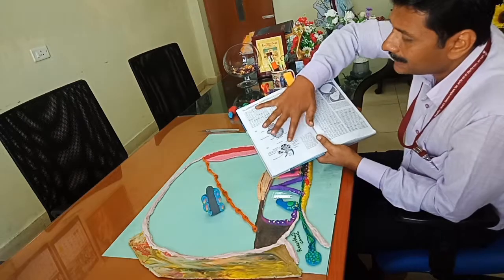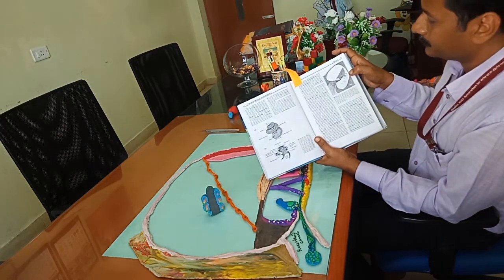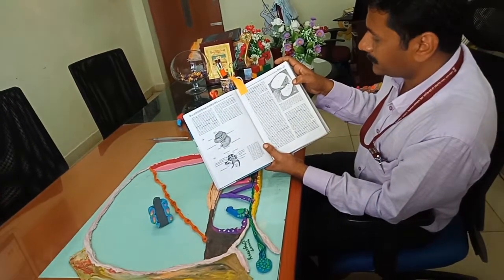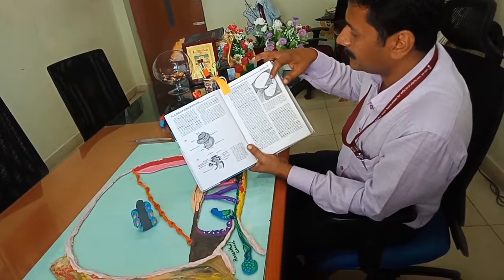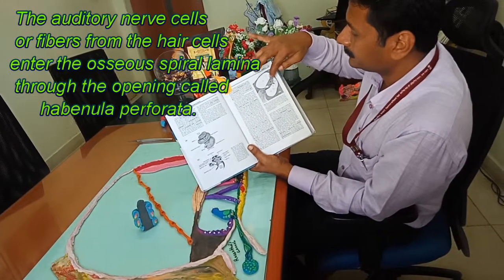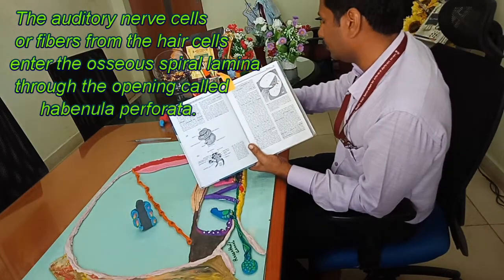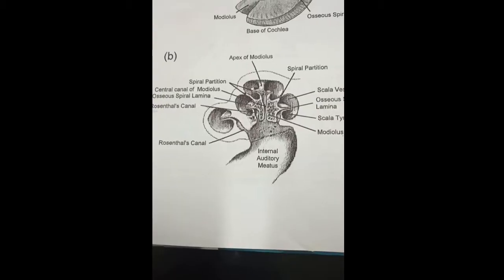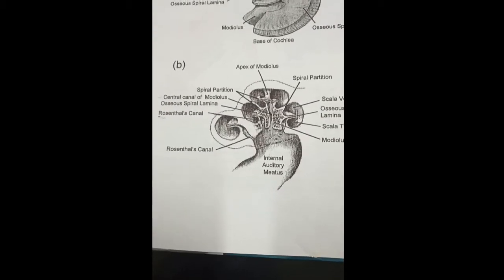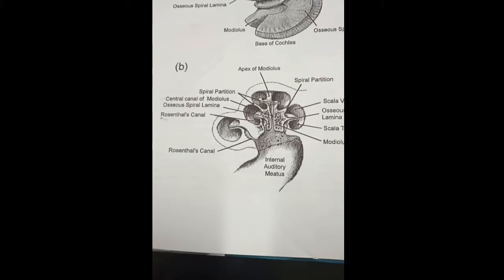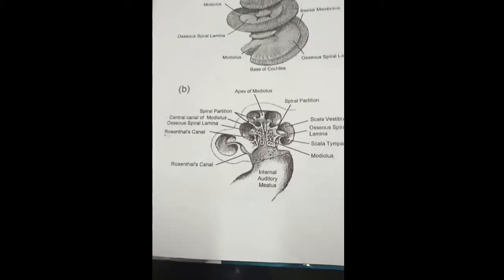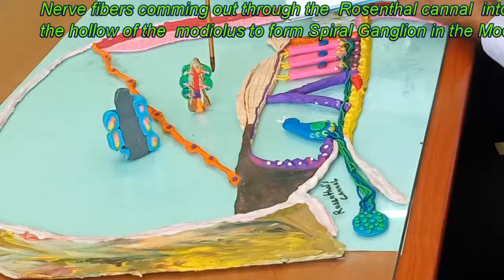To understand figure 2.25 better, which shows the cross-sectional view of the cochlea with the cochlear duct exposing its coiling around the modiolus, the center of the modiolus is hollow and leads to the internal auditory meatus. This particular model has been used to explain this arrangement, where the hollow portion of the modiolus leads to the internal auditory meatus.